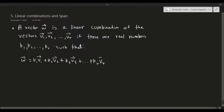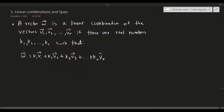So it's more or less just any vector of this form — w is said to be a linear combination of the vectors v1 to vr if there are scalars, or real numbers, such that w is a combination of this format. It is literally just a combination of the vectors all added up together, each with a scalar in front of them. These k1s and k2s are called the coefficients, which you should know from algebra.